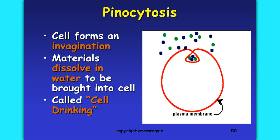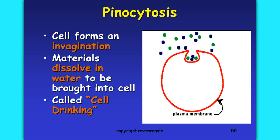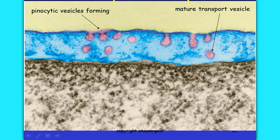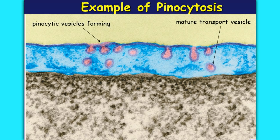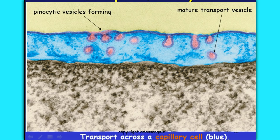One way to remember pinocytosis is to think of piña coladas — it's just like taking in a liquid. Here's a picture of pinocytosis: we can see vesicles forming on the surface of the cell membrane, one about to pinch off, and some literally moving to the inside of the cell. This is showing transport across a capillary cell — part of one of your capillaries that transports blood close to the surface of the skin. The capillary cell is shown in blue.